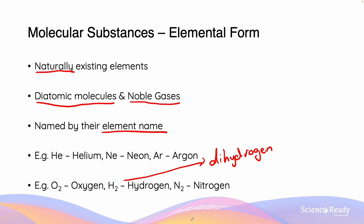For example, oxygen, which exists mostly as O2, can also exist as O3, which is a compound called ozone.